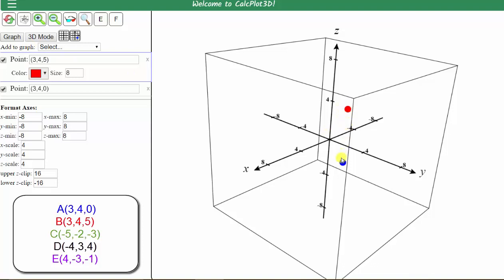Notice how this point is five units above the blue point because the x and y coordinates are the same, but for the red point, the z-coordinate is five compared to a z-coordinate of zero for the blue point.